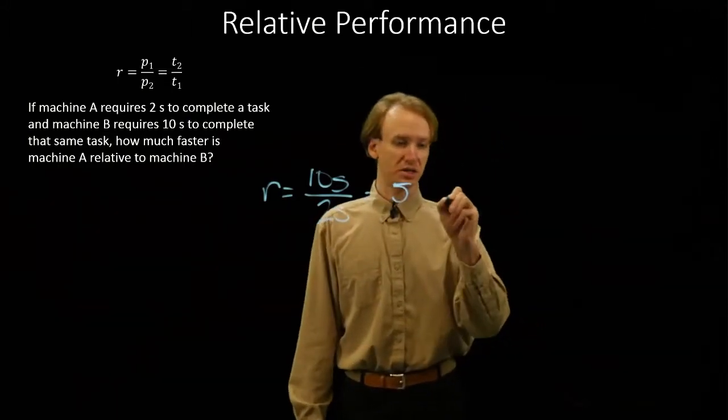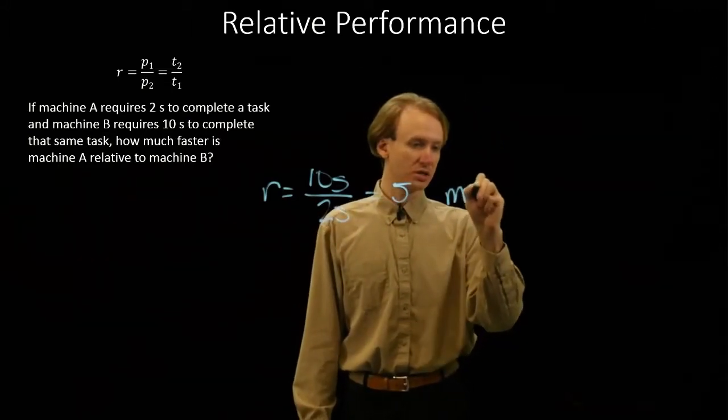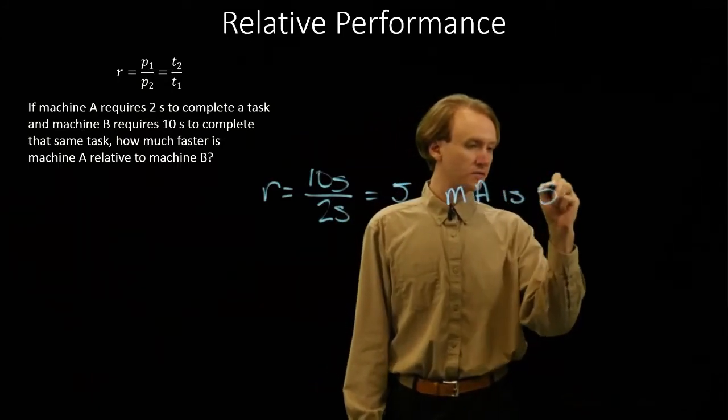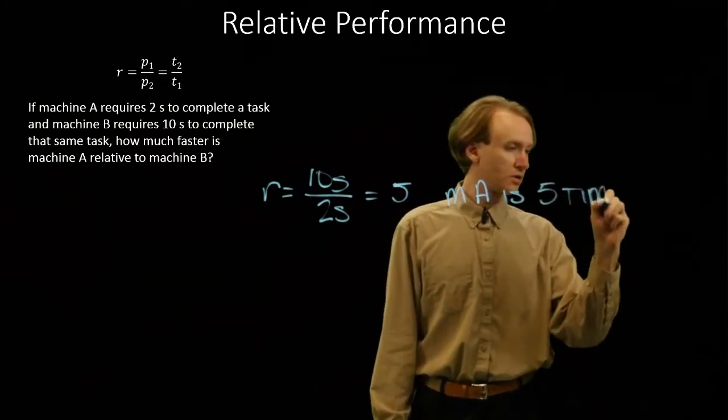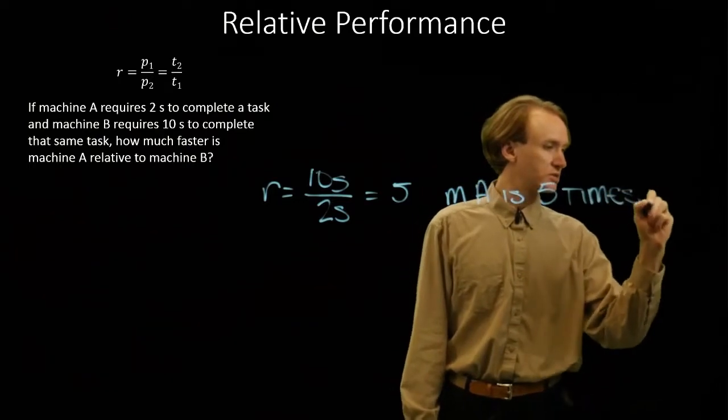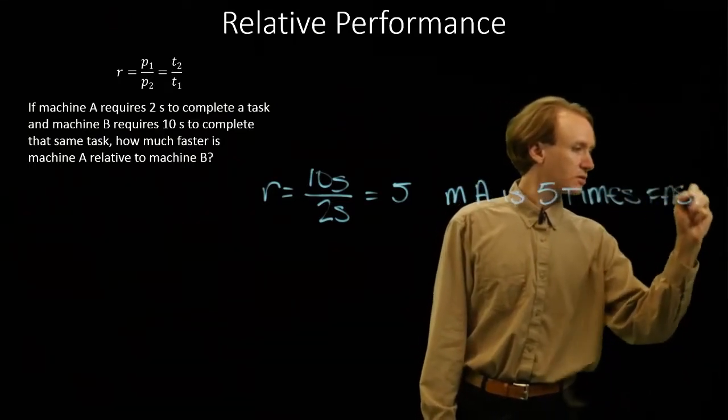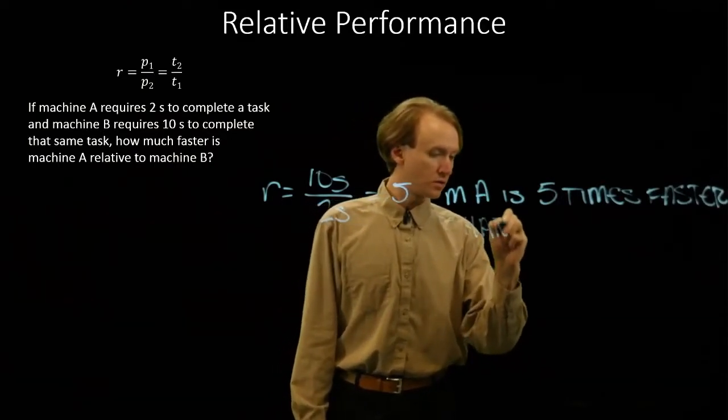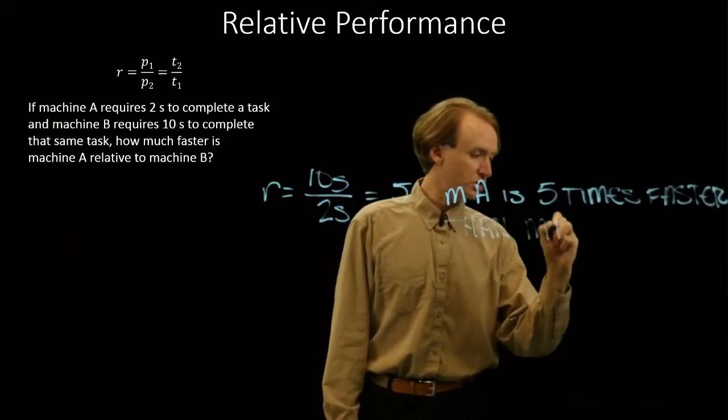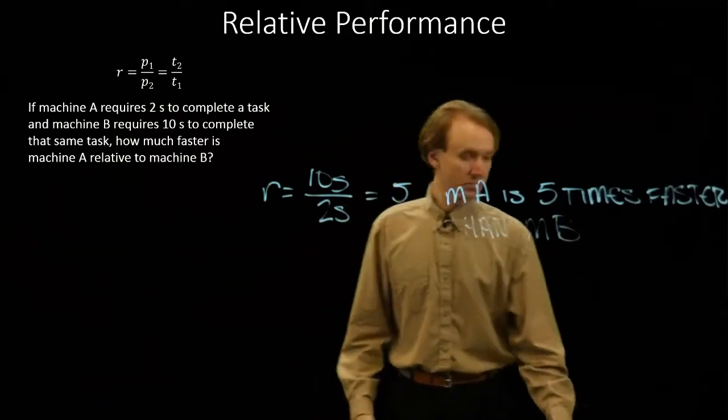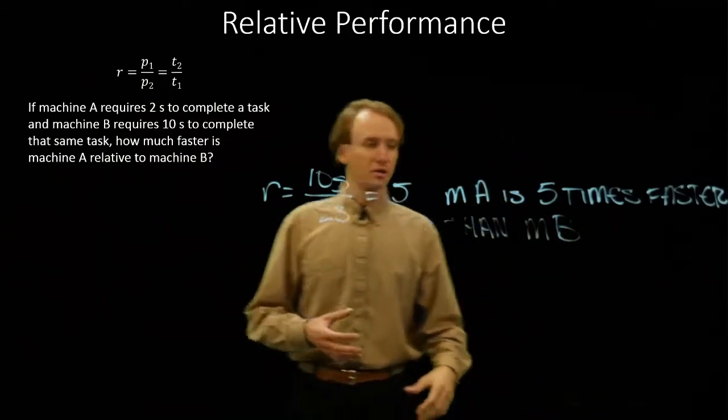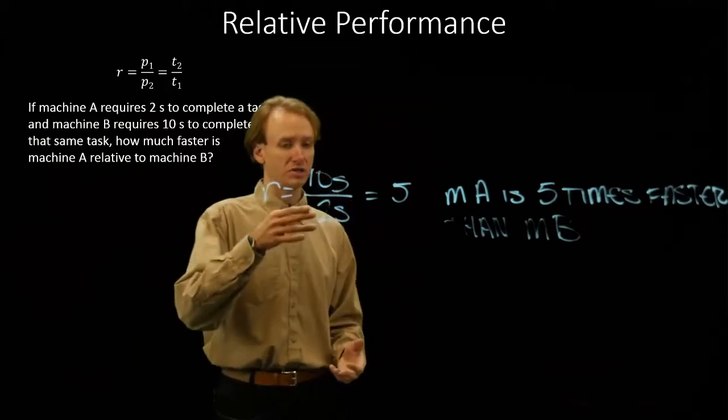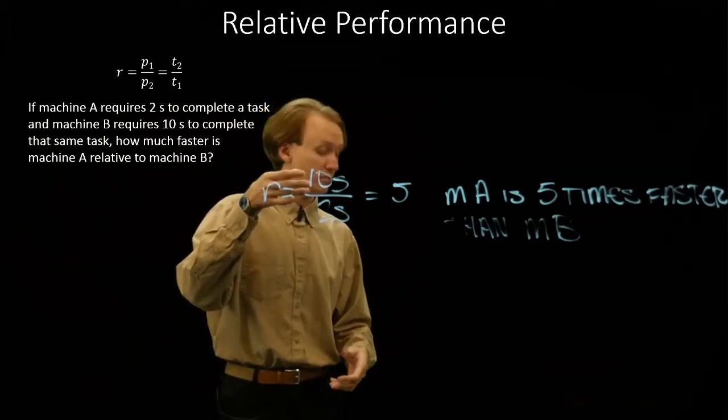So we can say that machine A is five times faster than machine B. There's nothing else terribly interesting about this, just that we realize machine A is much, much faster than machine B.